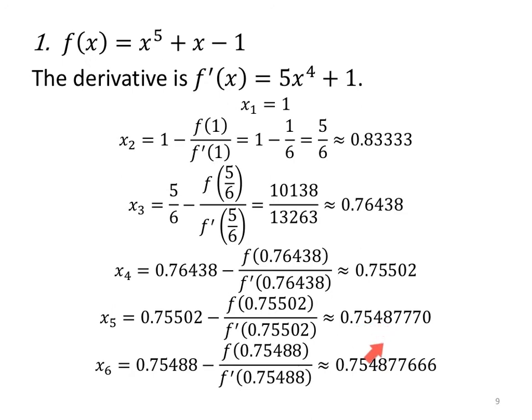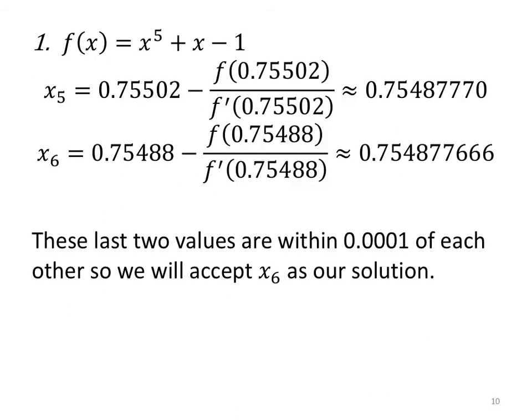x₆ = 0.75488, that's 0.754 eights, sevens, sevens. That's got some good accuracy. These two are really close to each other. And since these two are within tens, hundreds, thousands, ten thousandths, they're within ten thousandths of each other, they're definitely within one thousandth of each other. We're going to accept x₆ as our solution. So if I was approximating this zero of x⁵ + x - 1, I'd say it's at about 0.755. I would round to the third decimal place.